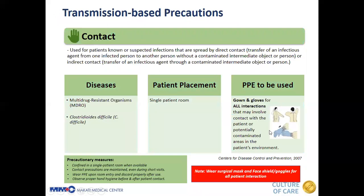Next is contact precaution. Contact precaution is used for patients known or suspected to have infections spread by direct contact — transfer of an infectious agent from one infected person to another without a contaminated intermediate object — or by indirect contact, which is the transfer of an infectious agent through a contaminated intermediate object or person. Examples of diseases for contact precaution include multi-drug resistant organisms and Clostridioides difficile or C. diff.